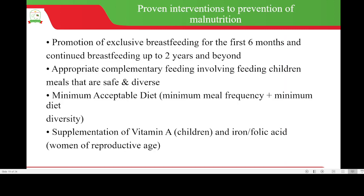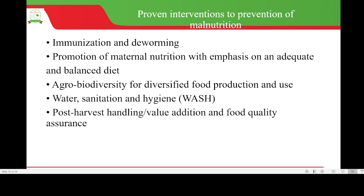The proven interventions for prevention of malnutrition include promotion of exclusive breastfeeding for the first six months and continued breastfeeding up to two years and beyond. Appropriate complementary feeding involves feeding children meals that are safe and diverse, with minimum acceptable diets accounting for minimum meal frequency plus minimum diet diversity. Additionally, supplementation of vitamin A in children and iron and folic acid for women of reproductive age, immunization and deworming, and promotion of maternal nutrition with emphasis on an adequate and balanced diet.